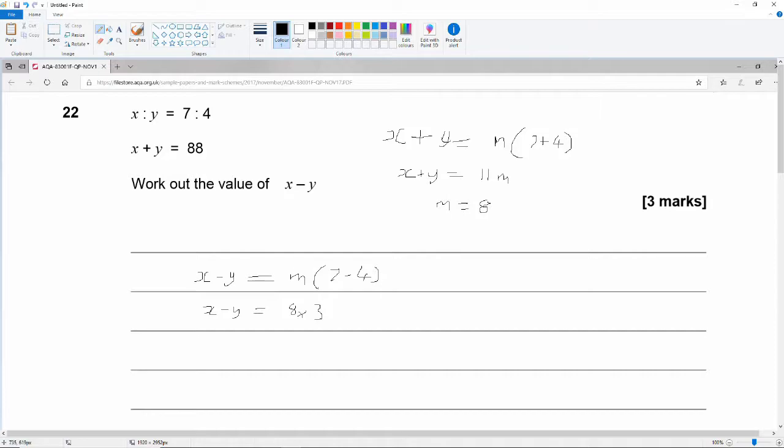So x minus y is equal to 8 times 3. And 8 times 3 is 24. So x minus y is equal to 24. So x minus y is equal to 24 without even having known the values for x and y.